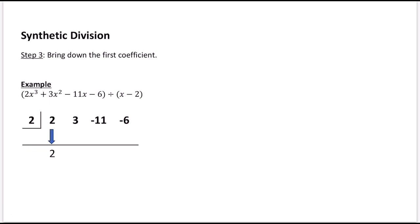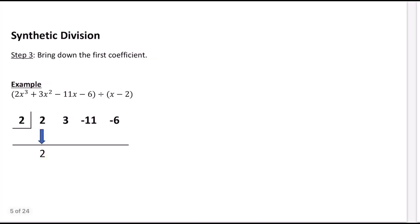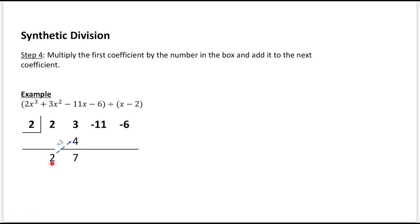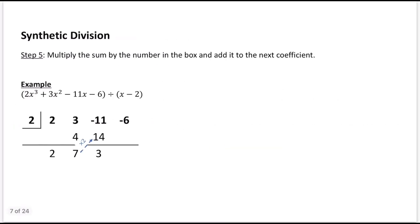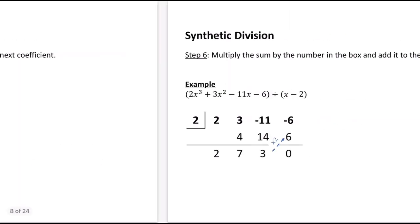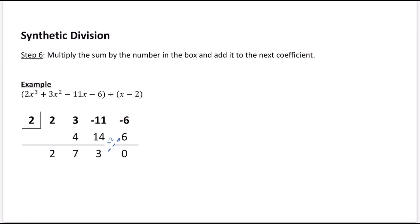We copy down the first coefficient — the 2 — into the last row. Then we take that number, multiply it by r in the box, and add it to the next coefficient. So we take 2, multiply by 2 to get 4, then 3 plus 4 gives us 7. Then repeat: 7 times 2 is 14, plus negative 11 gives 3. Then 3 times 2 is 6, and negative 6 plus 6 is 0.